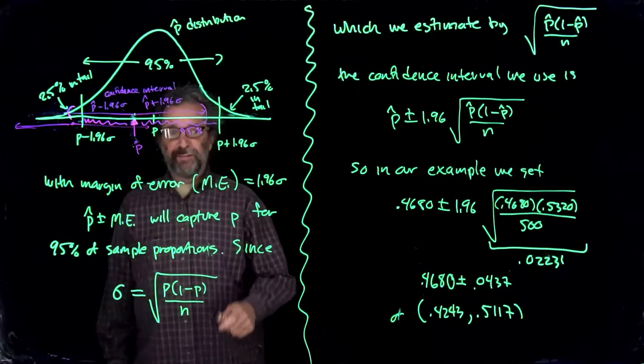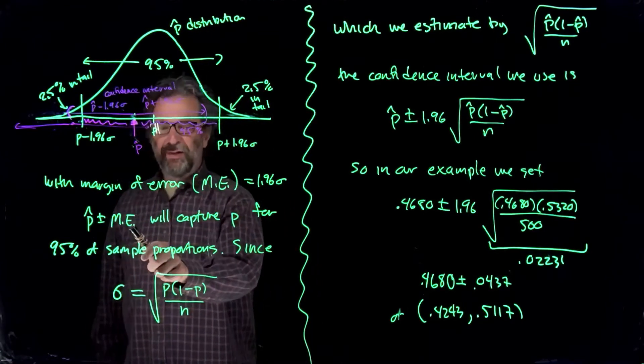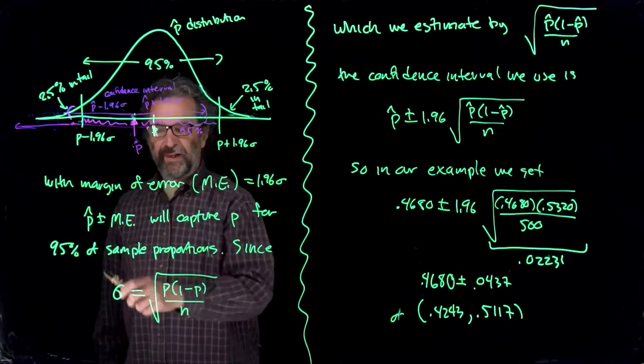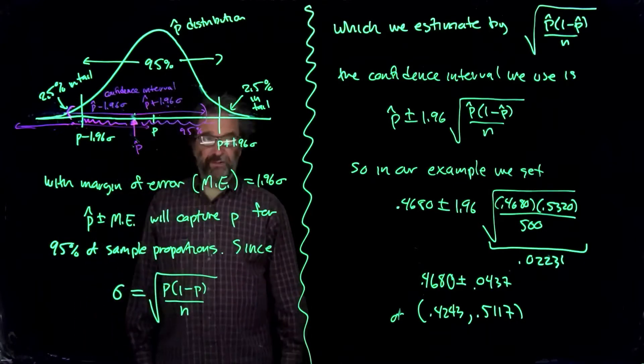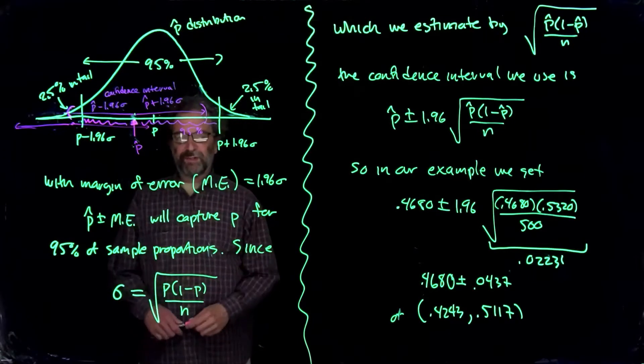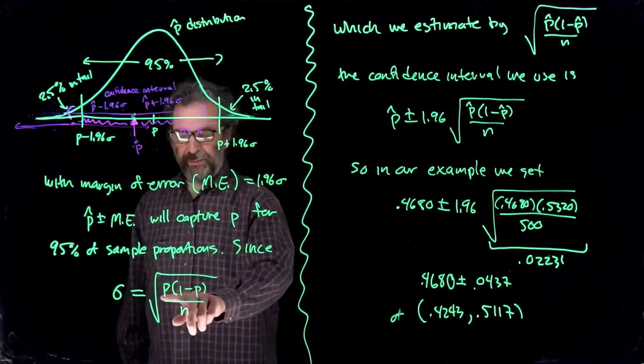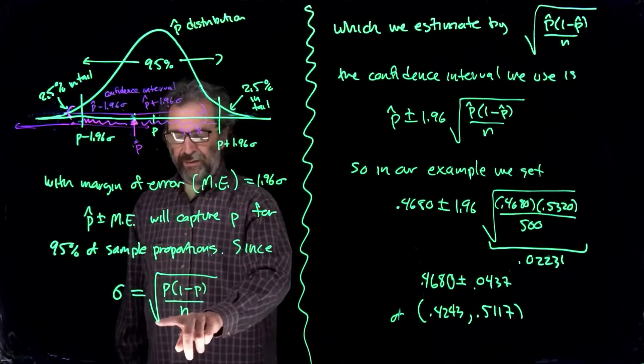So that means that with a margin of error of 1.96 sigma, p hat plus or minus the margin of error will capture p for 95% of sample proportions. Now all we have to do is find that sigma so we can build the margin of error. Now sigma looks like this for p hat. It's p times 1 minus p over n, square root.